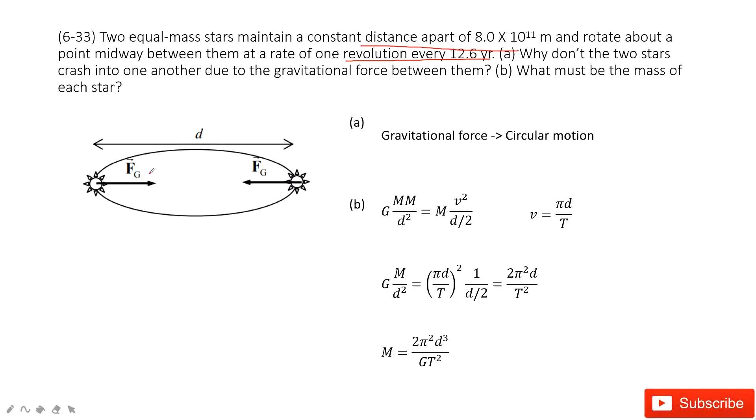So we look at this model. Of course, if there are two equal mass stars, there must be gravitational force pointing to each other. But why they don't crash? Because they will rotate with each other.